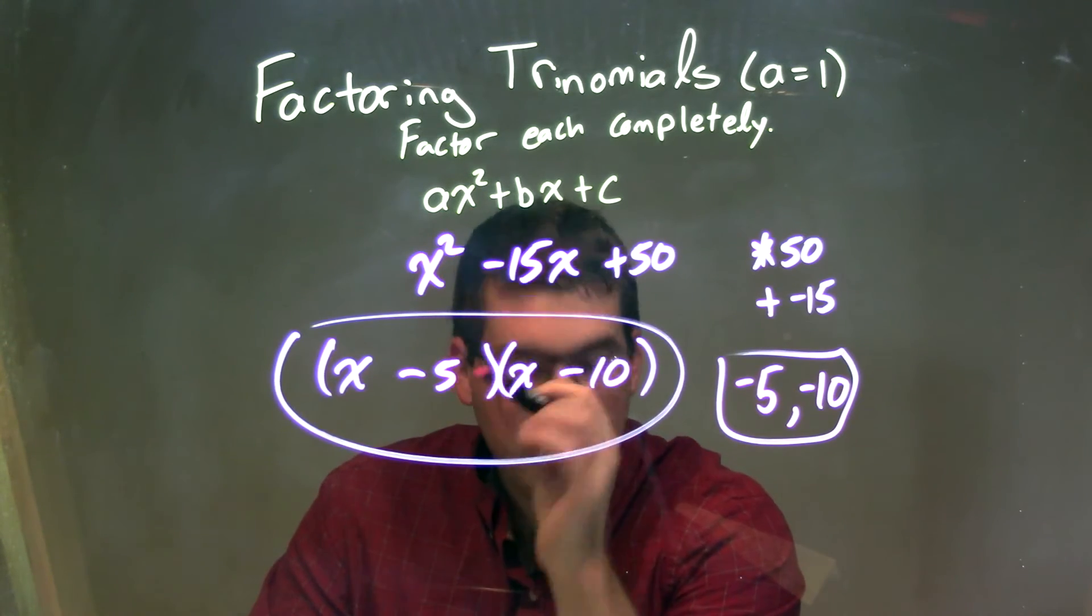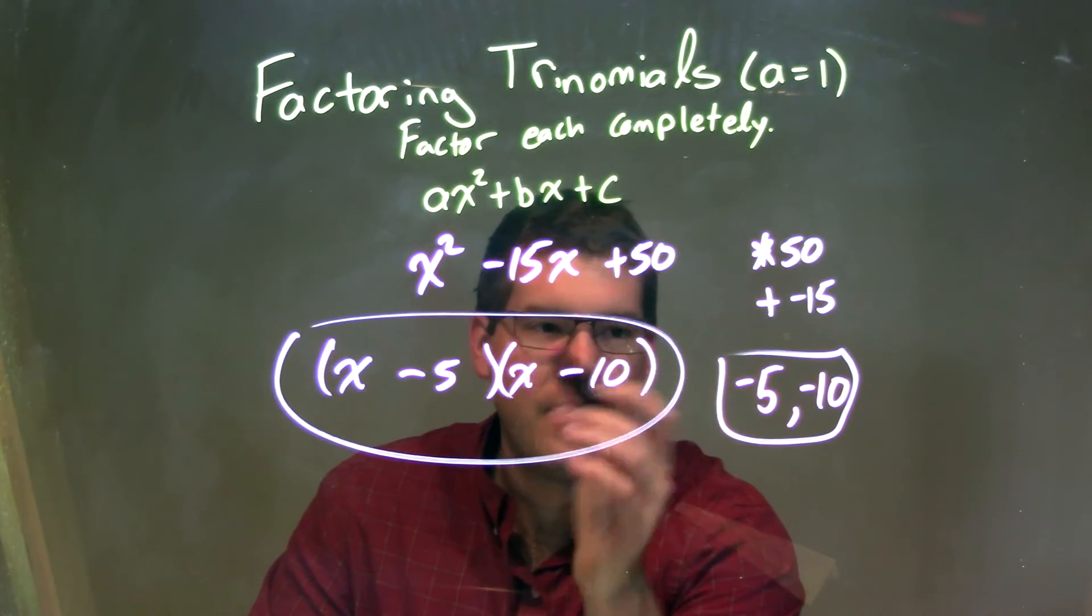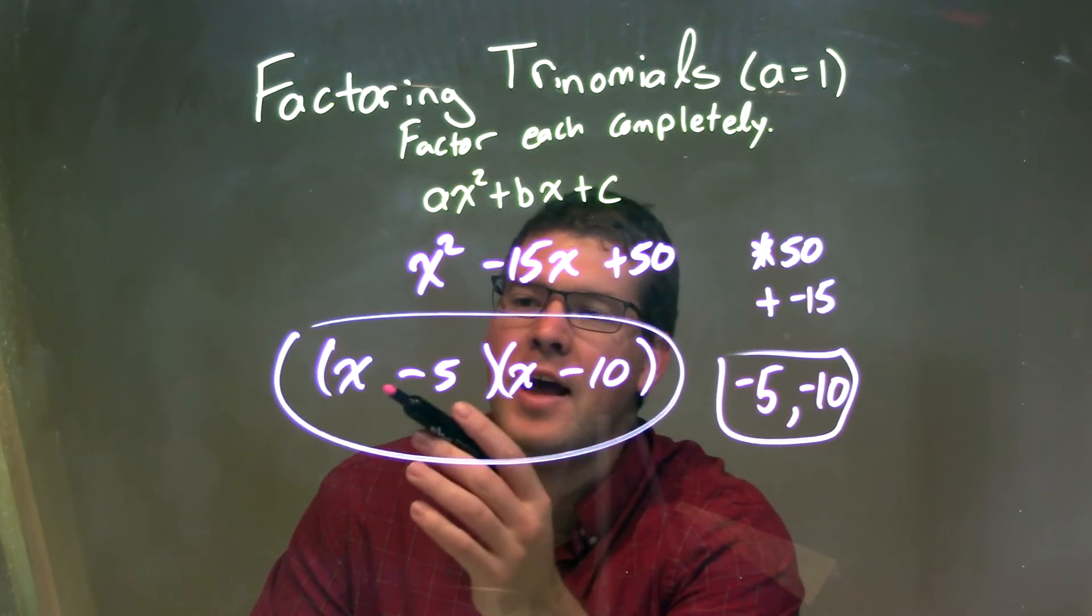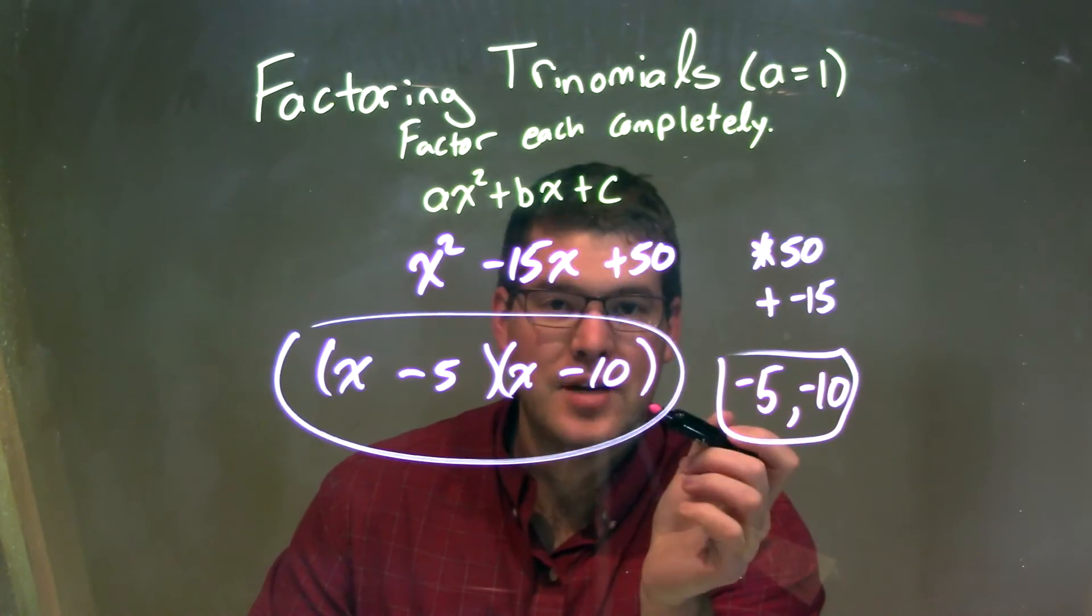So our final answer here is put in our factor form, x in the beginning, and then the numbers next to them, giving us x minus 5 times x minus 10.